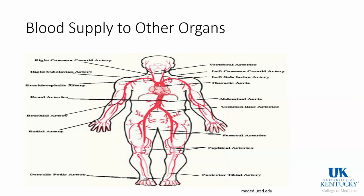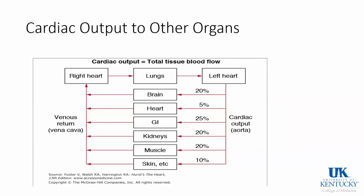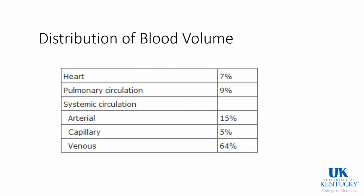This cartoon picture shows all the arterial supply and how everything is connected to cardiac output to the other organs. The major organs — brain, kidneys, and GI tract — each get about 20% of cardiac output. In contrast, blood volume primarily lives in your venous system, storing about 64% of blood volume versus 15% in the arterial system.